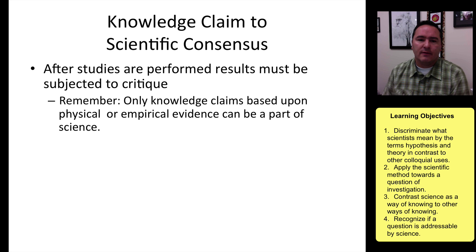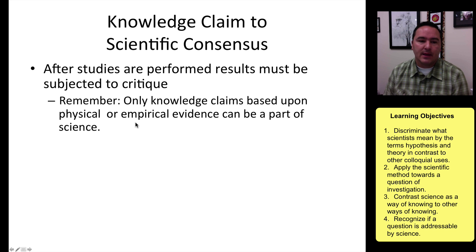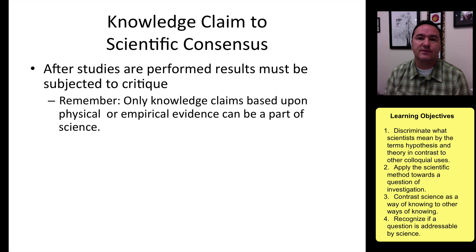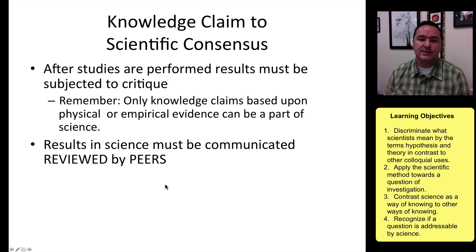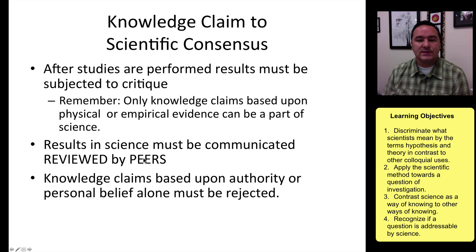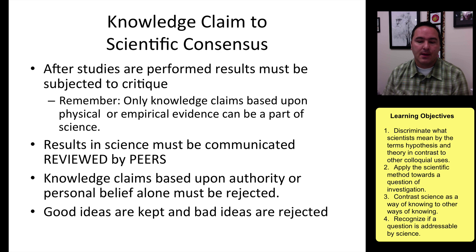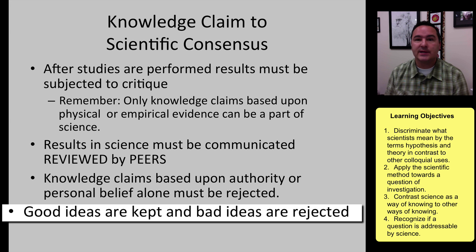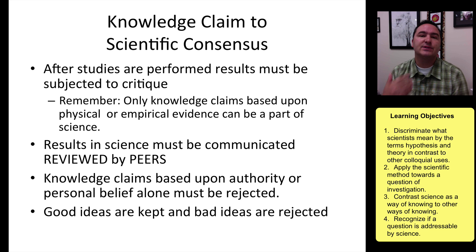Knowledge in science must reach the point of scientific consensus to become a very strong idea. The only way this happens is that a claim is tested, observations are made, and then it must be subjected to critique through peer review. Once knowledge claims have made it through peer review, they can become scientific consensus. If peers show the idea is not good, it can be rejected. Good ideas are kept and bad ideas are rejected — science continually gets rid of bad ideas and supports good ones.